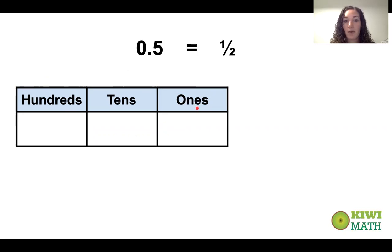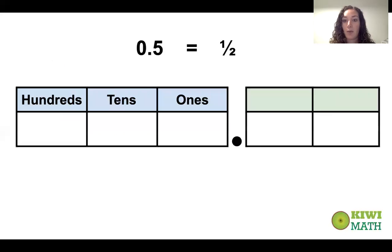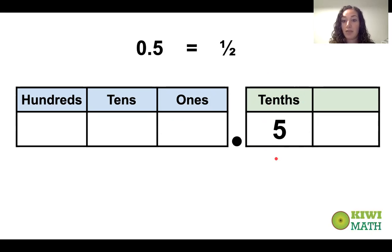Now we're going to think about what happens when we move to the right. After the ones place, there's this decimal point — we call this a decimal point. Anything after the decimal point is fractional parts, so it has to be less than one. Today we're going to be thinking about just this first place that comes after the decimal point, and that's tenths. So if we put 0.5 into our place value chart, it would be in the tenths place, and we would read this as five tenths.